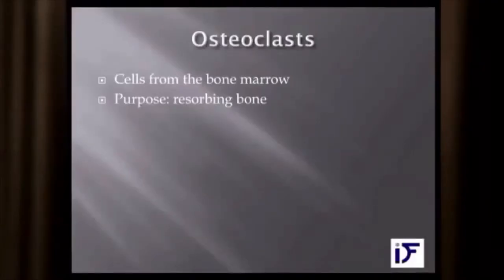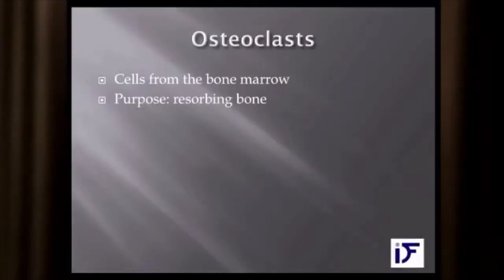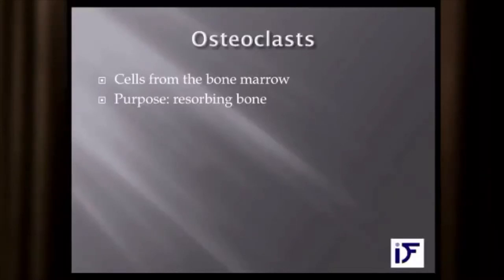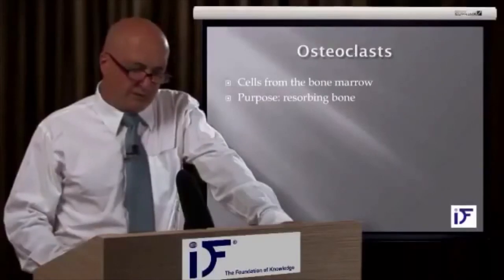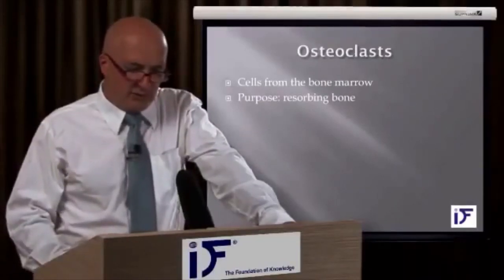Osteoclasts are very important cells because they are resorbing bone. The resorption of bone comes before the formation of bone in the normal case, so we need osteoclasts to get enough resorption. We need osteoclasts in order to renew the bone and to allow good perfusion through the bone. The purpose of osteoclasts is resorbing bone.